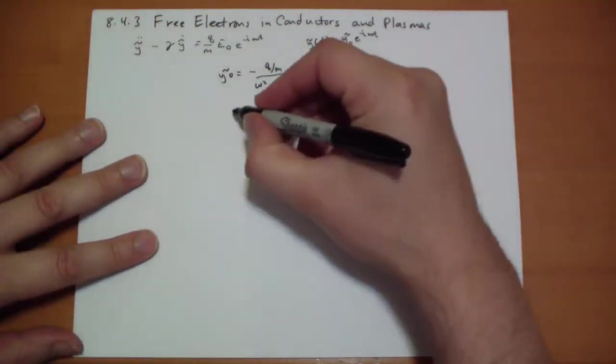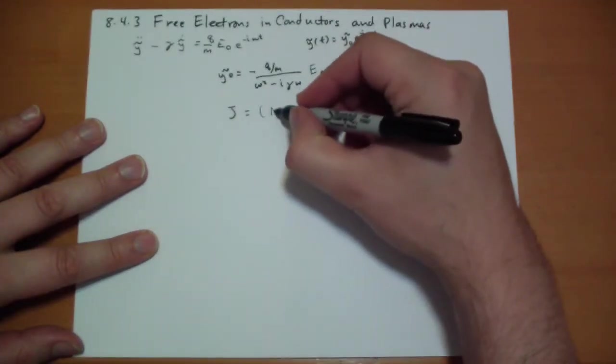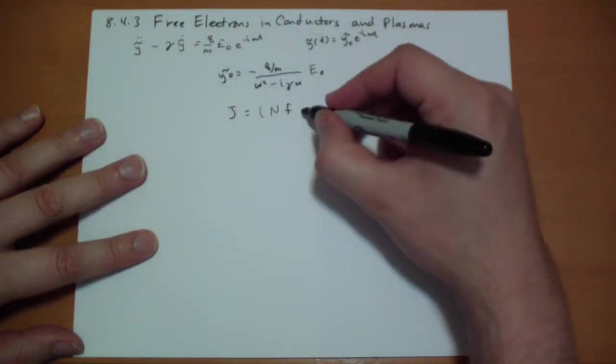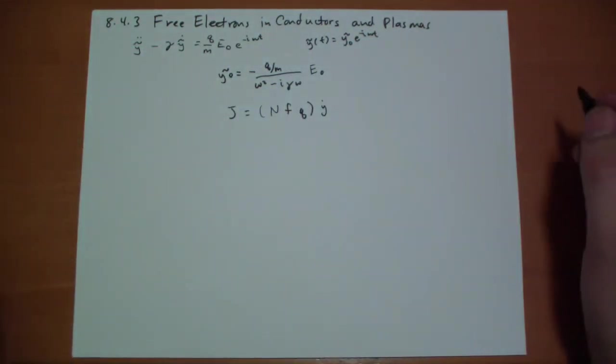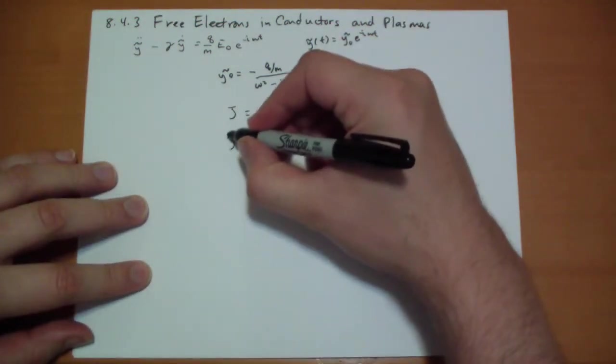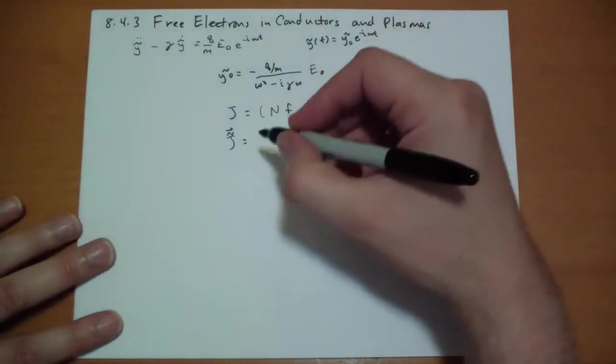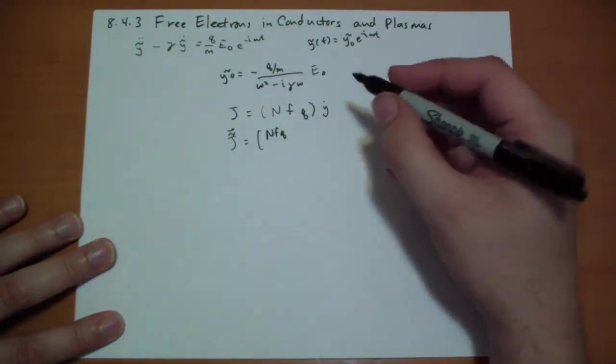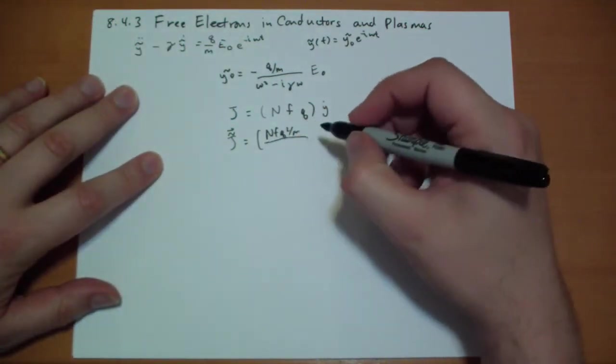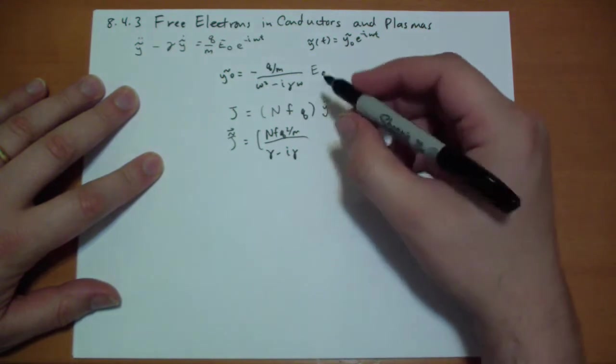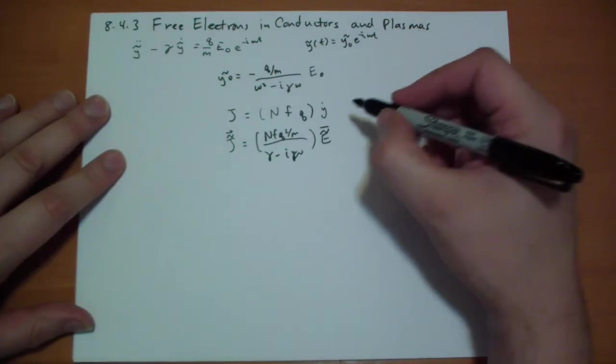The current j is just going to be the number of molecules times the number of free electrons per molecule times the charge of the electron times the velocity. So our complex j, the actual j is just the real part of that, is going to be nfq squared over m, q over m over here, divided by gamma minus i omega times the driving electric field vector.